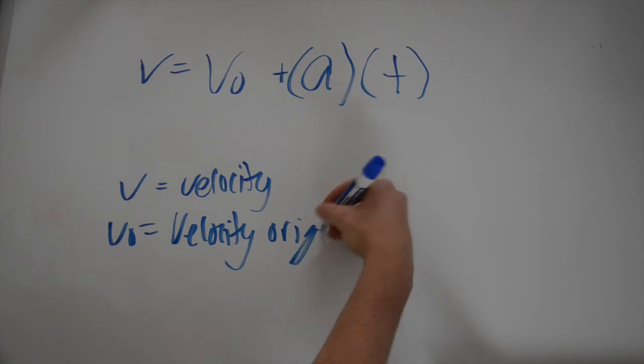In Chapter 2, there are four main formulas. The first formula is for velocity: V equals V₀ plus AT. V equals velocity, V₀ equals velocity original, A equals acceleration, and T equals time.